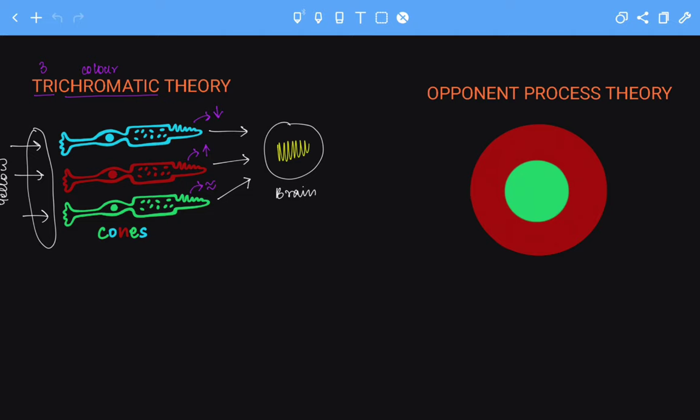Receptor complexes are complexes that have opposing traits. For example, this receptor complex over here has red and green. Red and green are opposing colors.